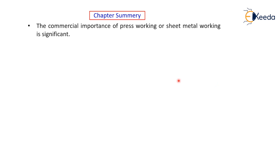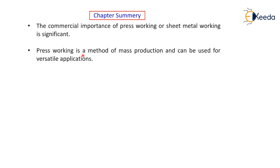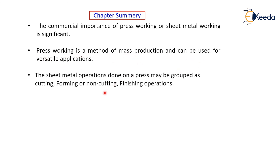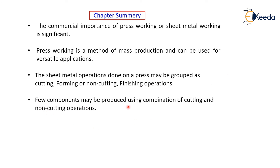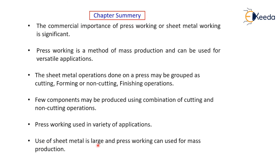In these sessions, we have learned a lot about press working operations. Let's have the chapter summary. The commercial importance of press working or sheet metal working is significant. Press working is a method of mass production and can be used for many style applications. The sheet metal operations done on the press may be grouped as cutting, forming, non-cutting, and finishing operations. Some components may be produced using a combination of cutting and non-cutting operations. It is used for a variety of applications, and the use of sheet metal is large.